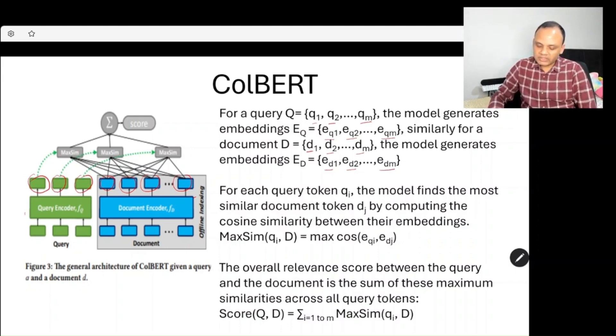For each query token qi, the model finds the most similar document token dj by computing the cosine similarity between the embeddings, given by maximum between qi and d.